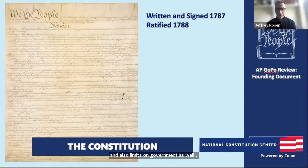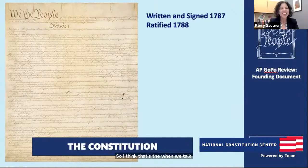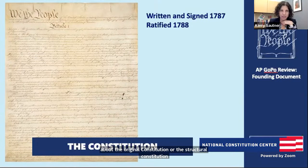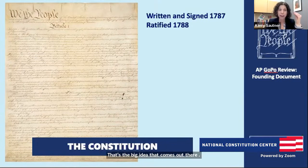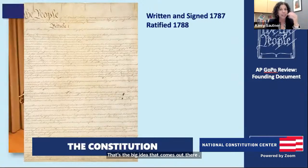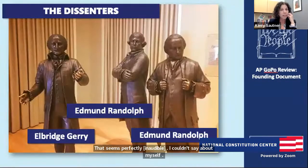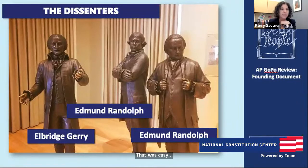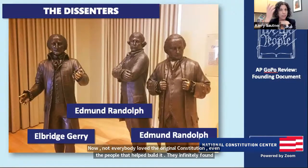Not everybody loved the original Constitution — even the people who helped build it instantly found flaws with it. That leads us to our next document and the story of the dissenters — a few of those who thought something was missing from the Constitution. Do you want to talk about them?